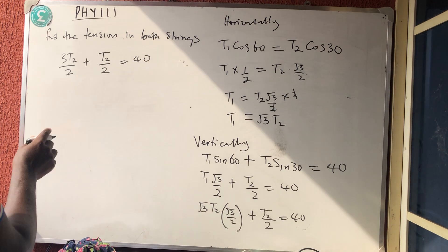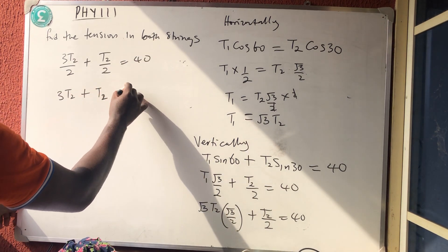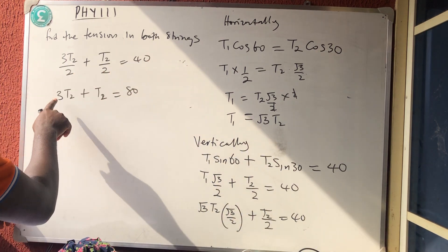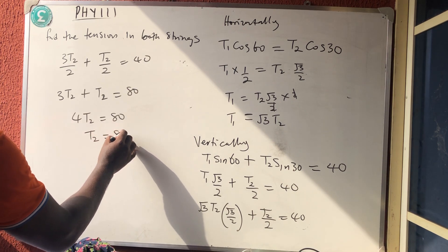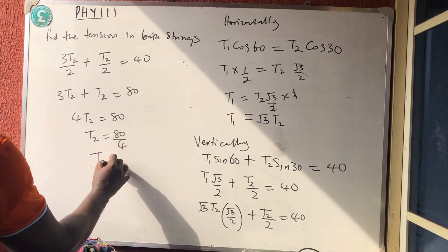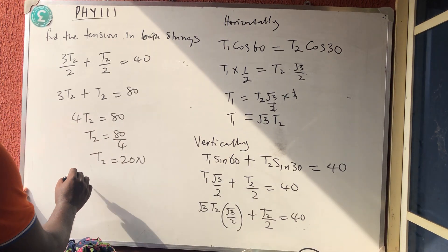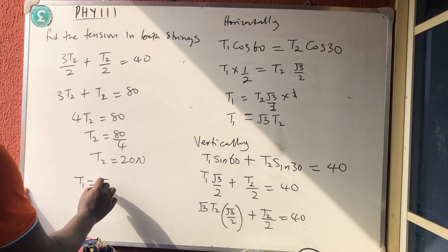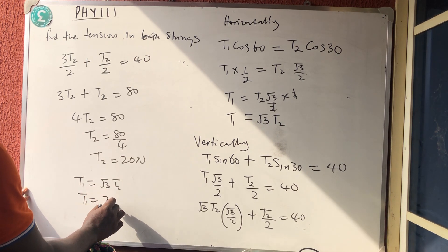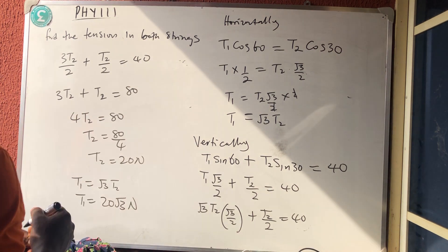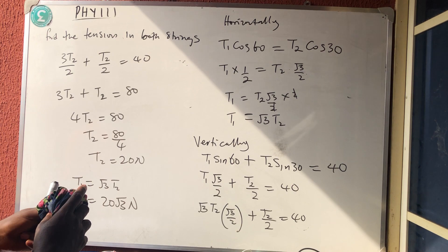Multiplying through by 2: 3T2 + T2 = 80, so 4T2 = 80, giving T2 = 20 Newtons. Therefore T1 = √3 × 20 = 20√3 Newtons.